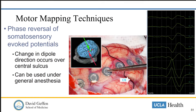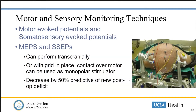Obviously, when it comes to motor or sensory cortex, the cost of being wrong is quite high. Another advantage of these techniques is that they can be used under general anesthesia.